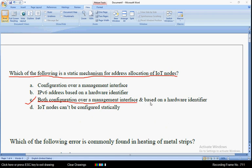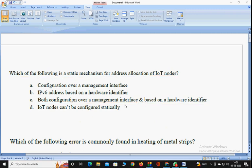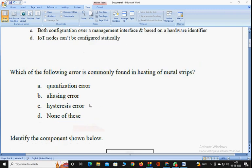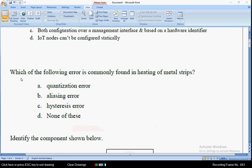The answer for the first question is option C: both configuration over a management interface and based on a hardware identifier. Coming to the second question: which of the following error is commonly found in heating of metal strips? The answer for the second question is option C: hysteresis error. So mark option C as the correct answer.